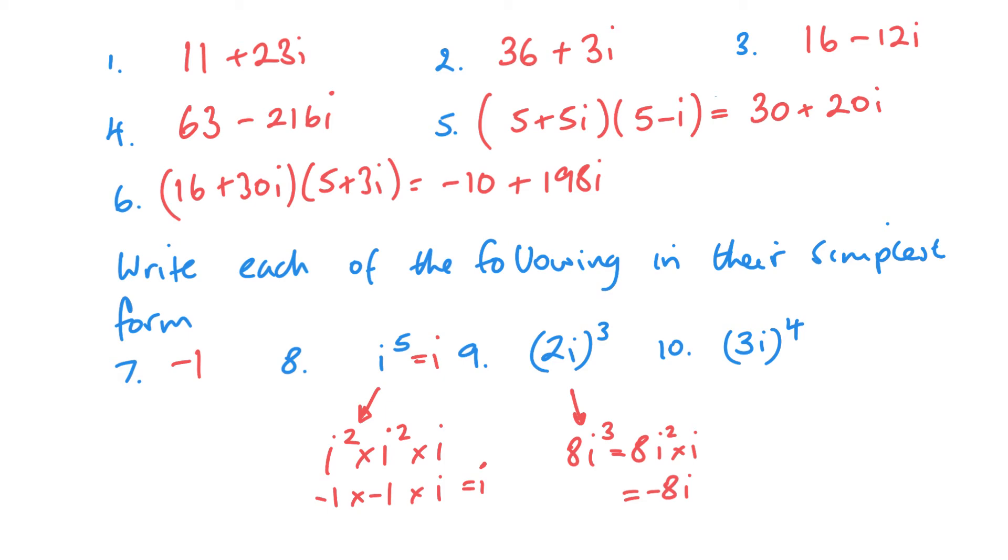And all of these answers are either going to end up with a real number or as an imaginary number just with the i there. And then 3 to the power of 4 is 81i to the power of 4. So this will be 81 times i squared times i squared. So that's minus 1 times minus 1, which is 1. So that's just 81. So that's my final answer, just 81 there.